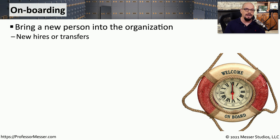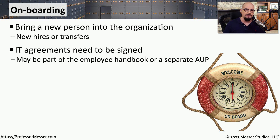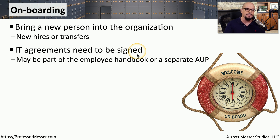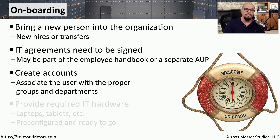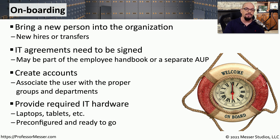Once we've decided to hire someone, we'll begin the onboarding process where we bring on a new person or a transfer to the organization. On the IT side, there are a number of steps that have to be followed. For example, there may be agreements that need to be signed, such as the employee handbook or an acceptable use policy. This user will need accounts to log into the network, a phone number, and email for communication. And if they don't currently have a system to use, we'll need to provide them with a desktop, a laptop, or some type of mobile device.